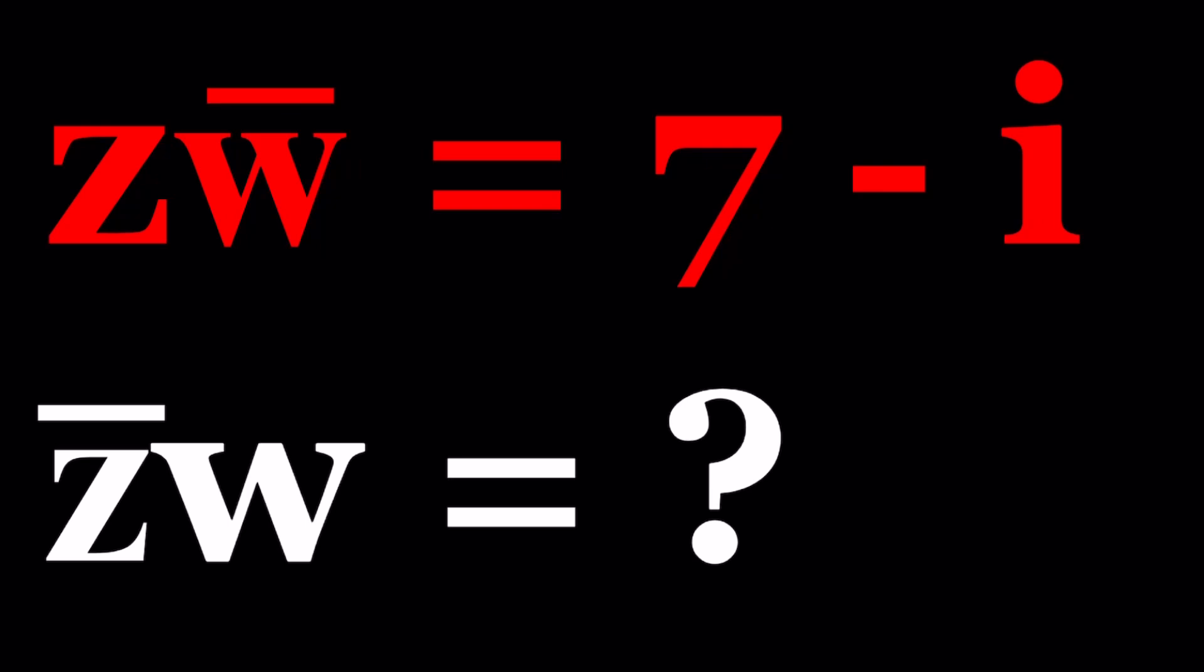So we're given Z times W bar equals 7 minus i, and we're supposed to evaluate Z bar times W. As you know, Z bar represents the complex conjugate of Z. We're presenting at least two methods. Let's get started.